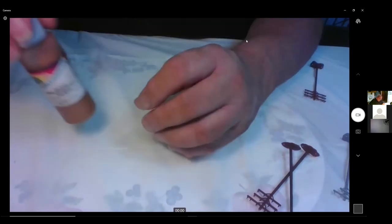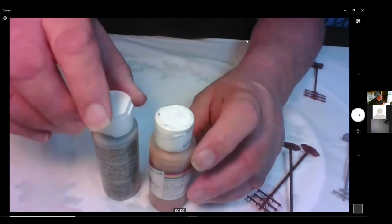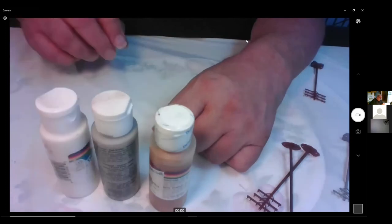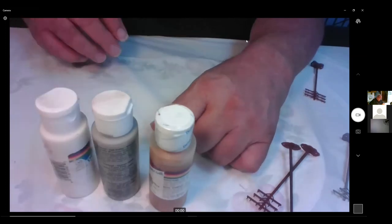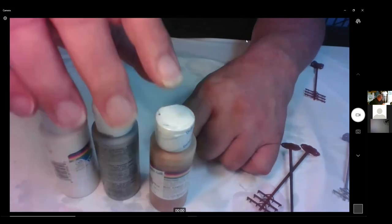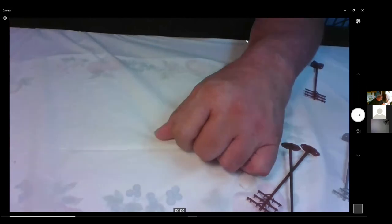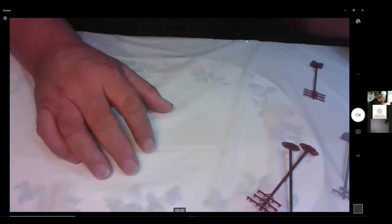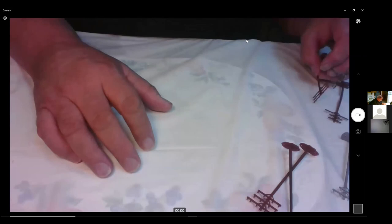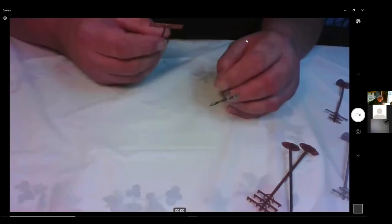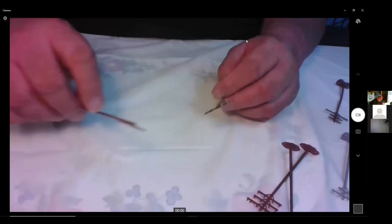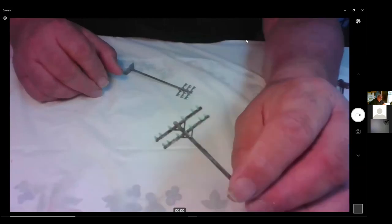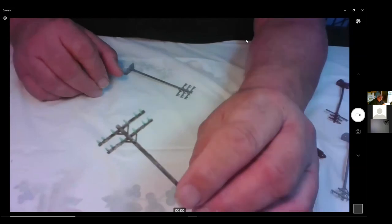Then once you prime them, it's a matter of using different browns and blacks and grays and washing colors on them. Just any kind of color you put on it that's brown or earth colors. You can kind of stain them, put washes, you can weather them to your heart's content. Now, when you get to a finished pole, little things that really help are the insulators.